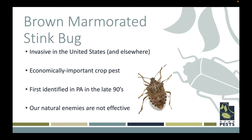The brown marmorated stink bug is also now common in Utah. It's an invasive insect in the United States and other countries. It's economically important as a crop pest for vegetables and fruit crops, especially in Northern Utah areas including Utah County, Salt Lake County, Davis, and Weber counties — and it's certainly creeping further north. It feeds on pretty much every crop we plant here in Utah. It was first identified in Pennsylvania in the 1990s, and unfortunately our natural enemies already present in North America are not very effective at managing this insect, which is why it's spread throughout the whole country.